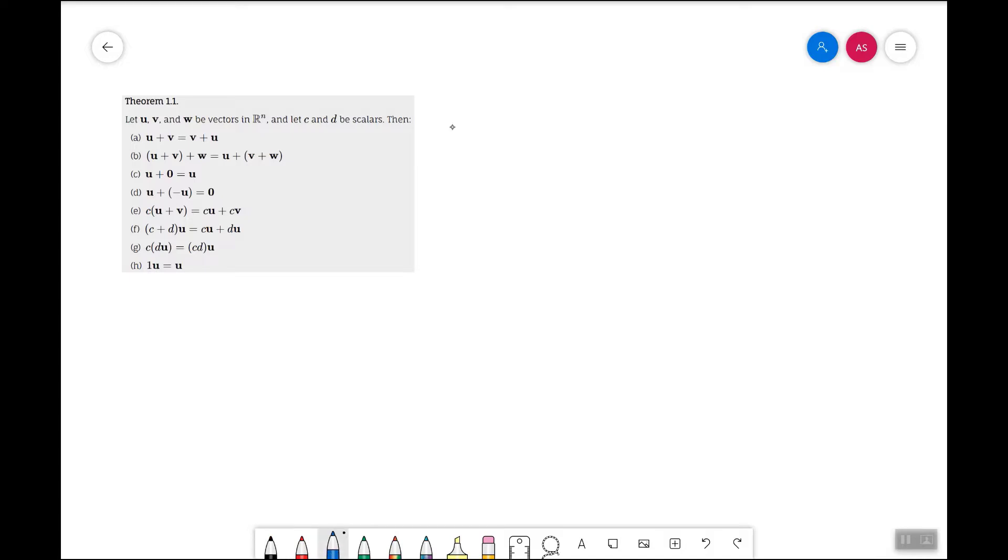So here we're gonna proof of part A. How does this work? Well, we can write the vector u as u1 through un, because they're in Rn, so that means they have n components, and we can write the vector v as v1 through vn.